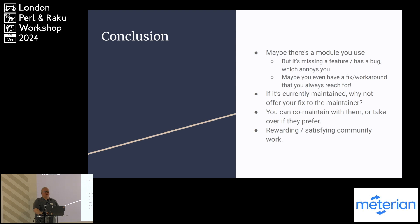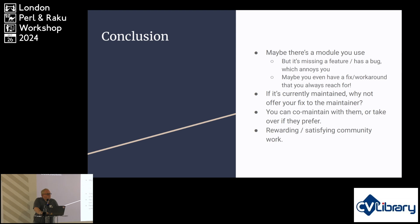If you are the first-come maintainer of a module, you can add tags like 'adopt me', 'hand off', or 'needs help' — there are various ways to indicate that. If you are the maintainer and you want to hand it off fully, you can click the thing yourself or ask the PAUSE admins to do that, to hand it off fully to someone else — and they become the new owner of that module in PAUSE space.